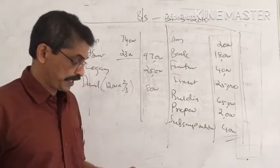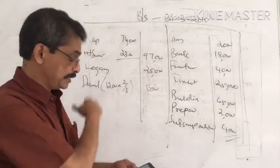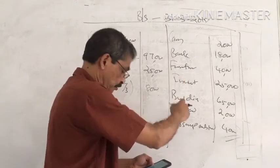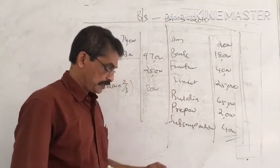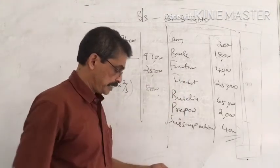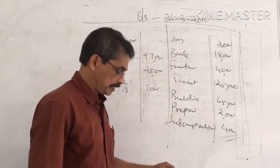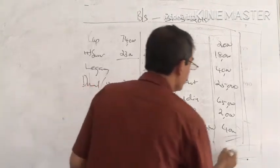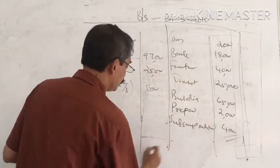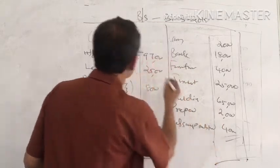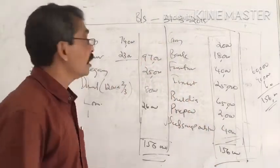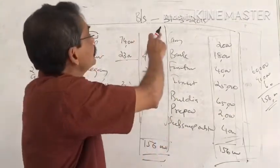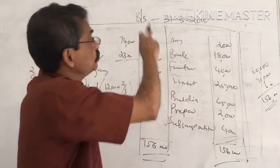To summarize: we had opening cash and bank balances, donations, subscriptions, legacy, interest on investment, sale of old newspaper, rent, interest on loan, insurance paid in advance, furniture, and subscription outstanding. All these items are now correctly placed. The closing balance sheet is confirmed to be totally correct, dated 31st March 2018.